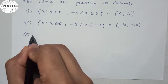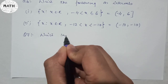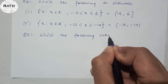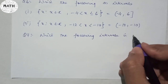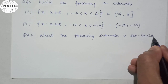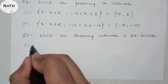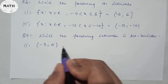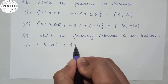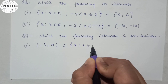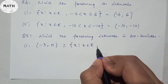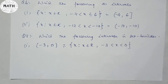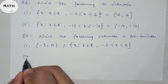In a similar manner, let us do question number seven: write the following interval in set builder form. Number one is given to be (−3, 0). Both are in round brackets, so that will be: X such that X belongs to R, minus three less than X less than zero. That's all about your set builder form.